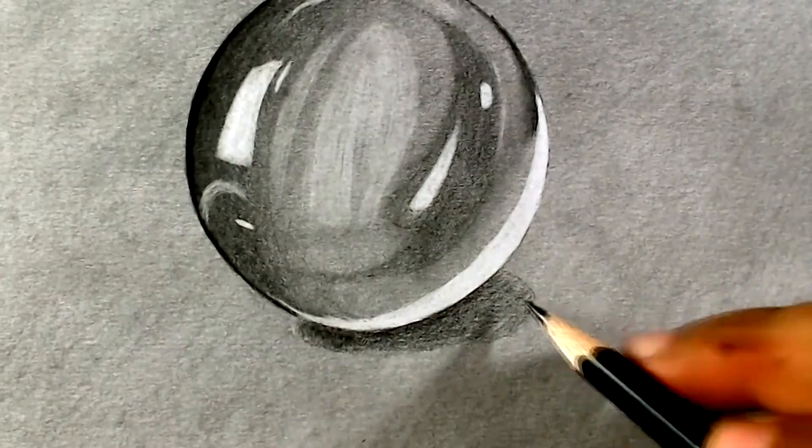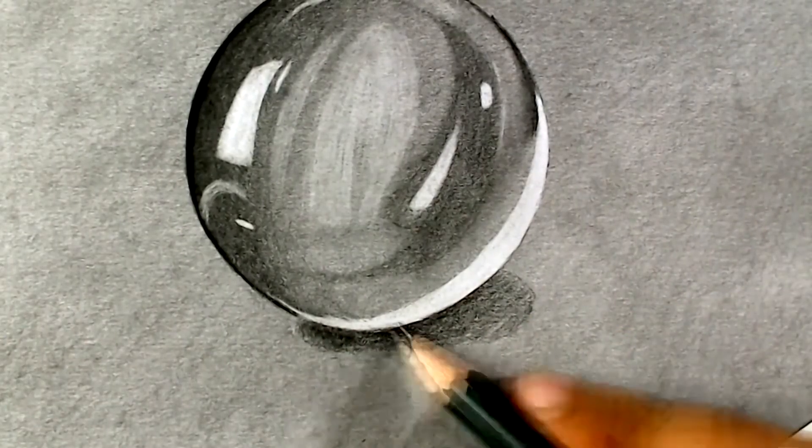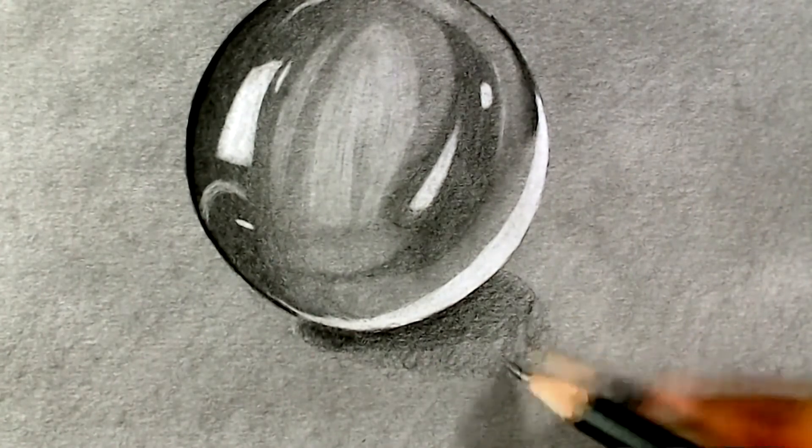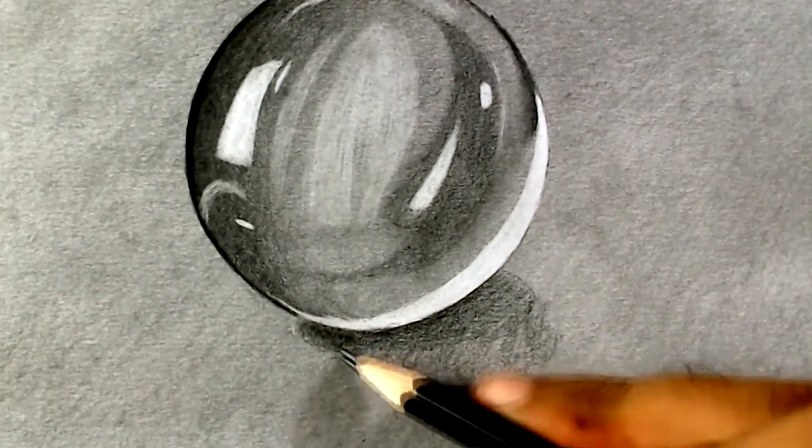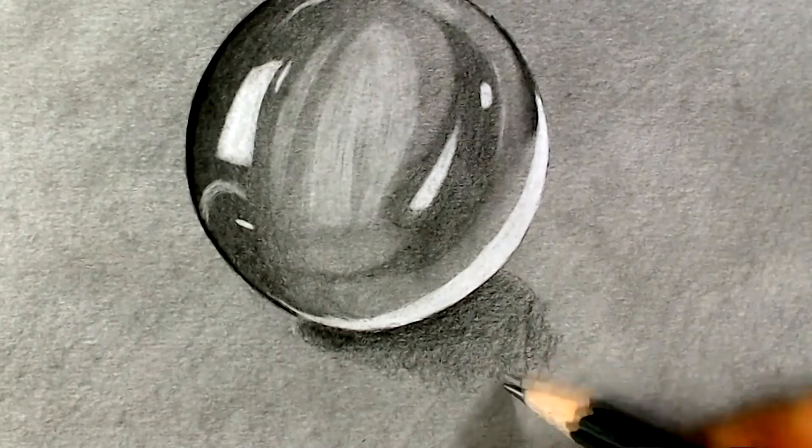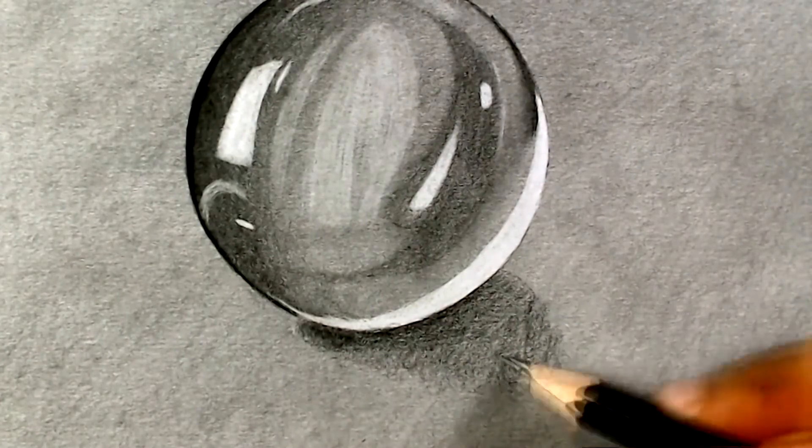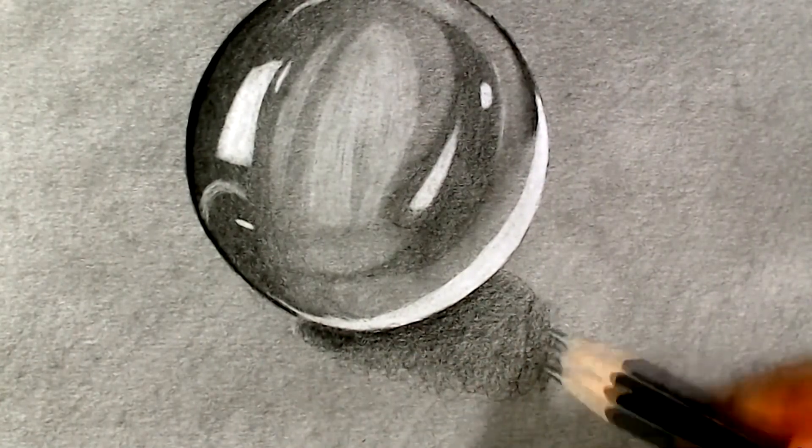All right, once we've got in the darker area, we're going to make a transition between that dark area going over to the lightest area of the paper, going down on the opposite side of where the light is coming from.